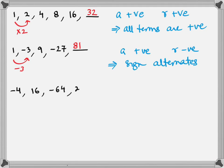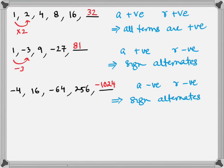Now look at the third series. What is the multiplication factor? It is -4. If -4 is the multiplication factor and the first term is negative, because of that negative multiplication factor the sign alternates, and the series consists of positive and negative terms.